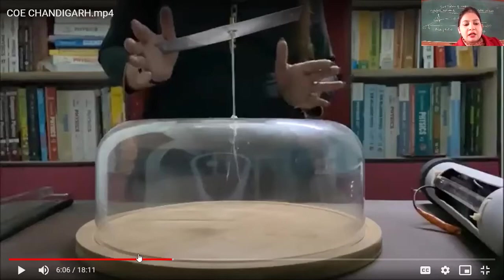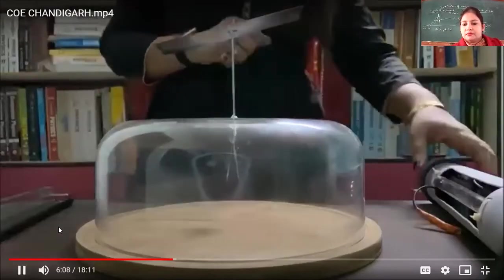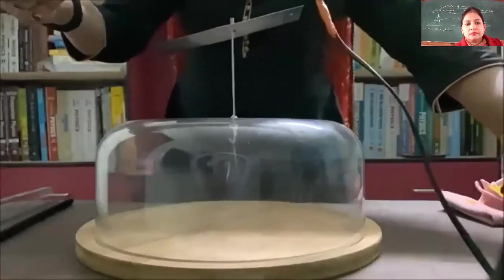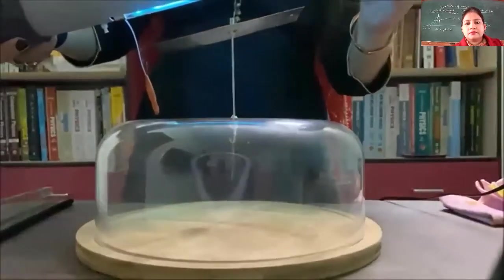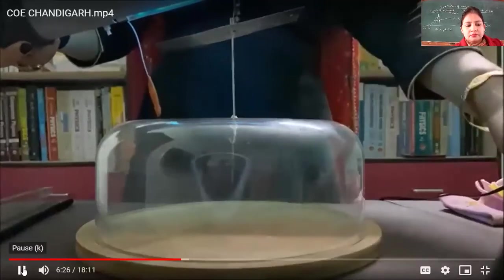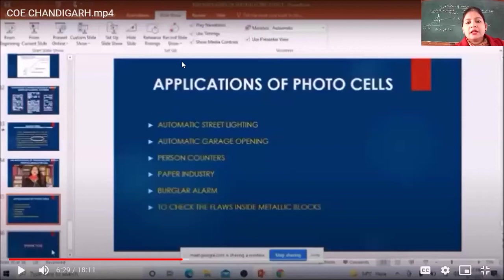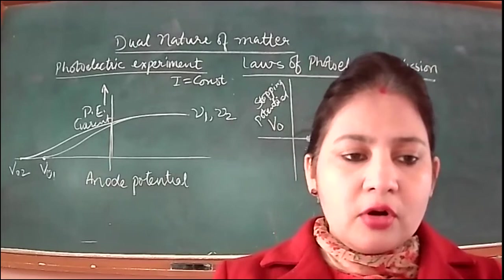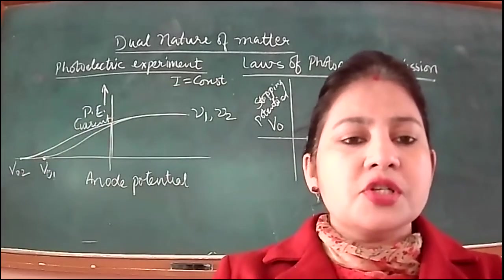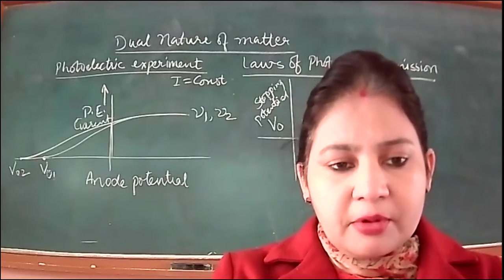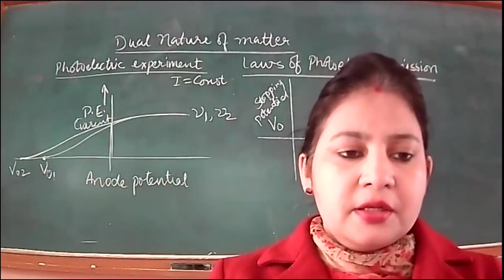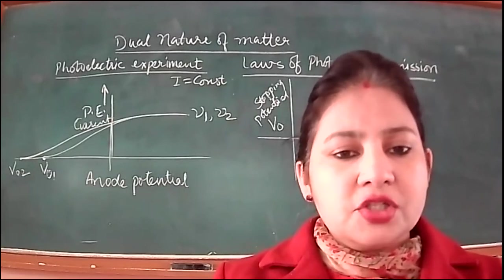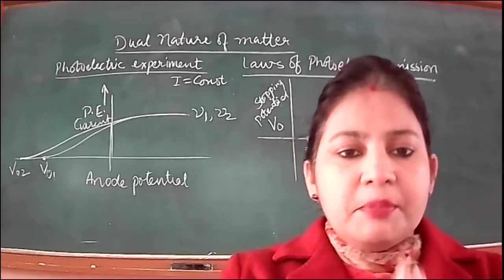We will now bring ultraviolet light near it to show the photoelectric effect. When UV light is shone on it, you can see the leaves have discharged — they are losing their charge because of the photoelectric effect. When we charge the electroscope using an ebonite rod (negatively charged) and repeat the same procedure, the electroscope becomes positively charged. When UV light is brought closer to the zinc plate in that case, nothing happens.